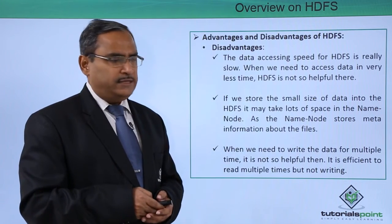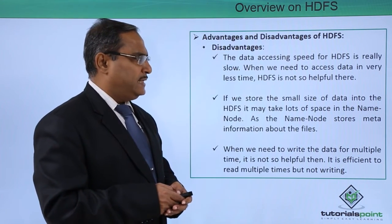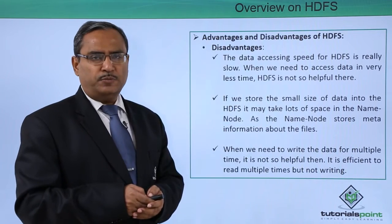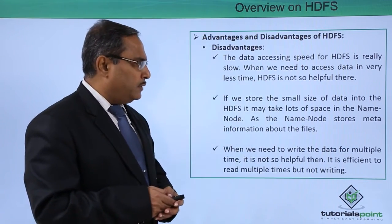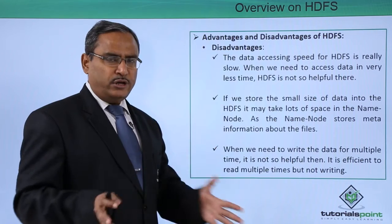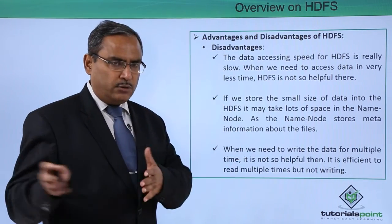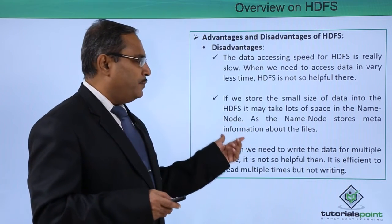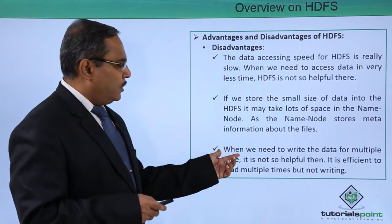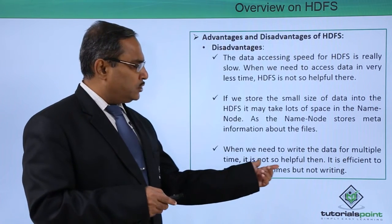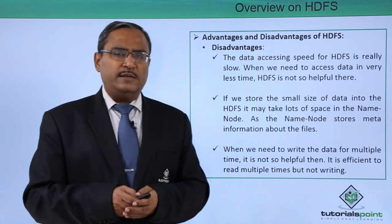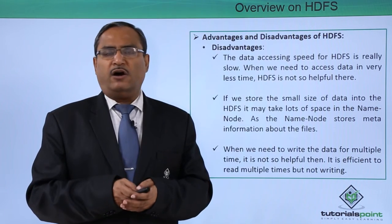Now let us go for the disadvantages of HDFS. The data accessing speed for HDFS is really slow, and when we need to access data in less time, HDFS is not very helpful. If you store small-sized data into HDFS, it may take lots of space in the name node, because the name node stores meta information about the files — so HDFS is not suitable for storing small-size data. When we need to write data multiple times, it is not helpful, as it is efficient for reading multiple times but not for multiple writes.